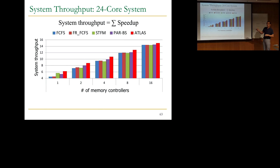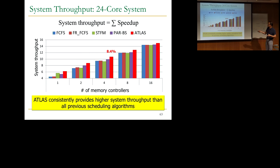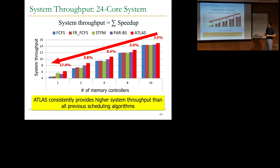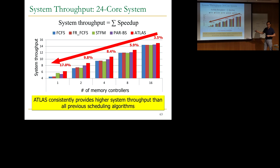Let's look at the results of ATLAS. We're looking at system throughput with a 24-core system, measured as weighted speedup, varying the number of memory controllers. ATLAS consistently provides higher throughput — with four memory controllers, you get 8.4% throughput over PARBS, the best previous scheduler. If you're extremely bandwidth-bound, scheduling becomes much more important and you get higher relative improvement. If you have a very high number of memory controllers, absolute performance is very high but scheduling matters less — the delta between schedulers is almost non-existent. Scheduling matters most when you're somewhere in between — moderately bandwidth-constrained.